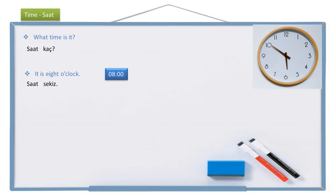But, as you know, in English we use a.m. and p.m. From 12 midnight to 12 afternoon is a.m. From 12 afternoon to 12 at night is p.m. So how are we going to say these times in Turkish? Let's see the examples.